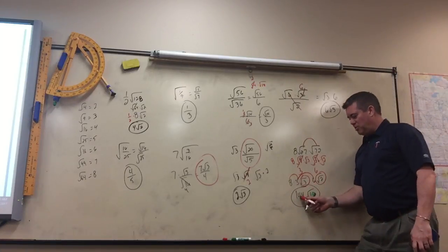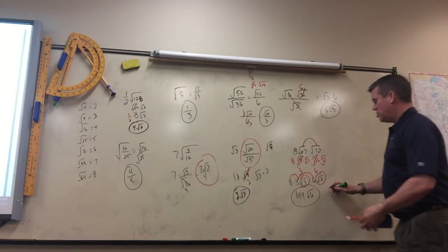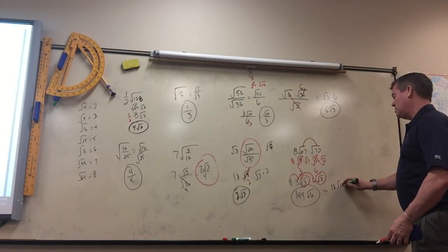Now, they kind of deliberately give you a number like this, and some people say, well, that's a perfect square root of 2. That's 12. So you may write it as 12 square roots of 6 and then get it wrong.